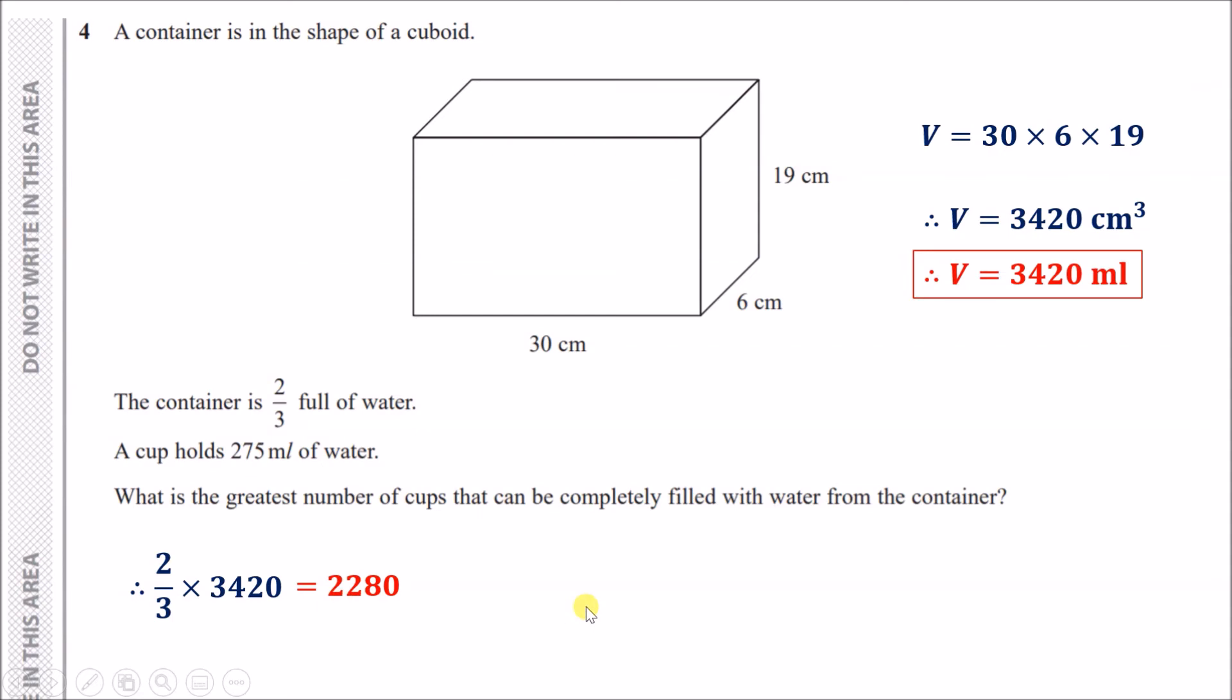We can fill exactly 2280 over 275—punch that in your calculator and you get a decimal answer. The question asks what is the greatest number of cups that can be completely filled. The greatest number is exactly 8 because you'll fill up 8 cups and still have some decimal in another cup. You can fill exactly 8, and that's it.